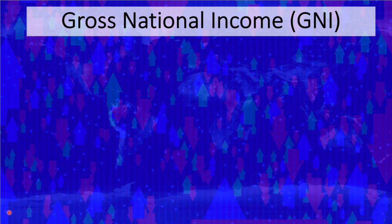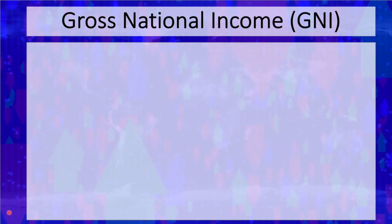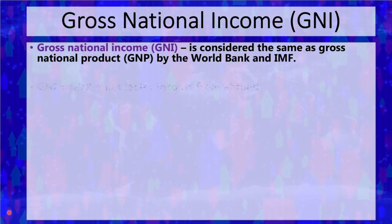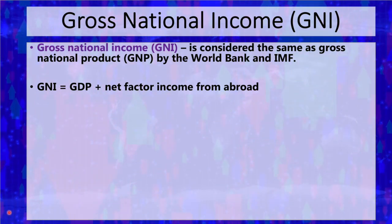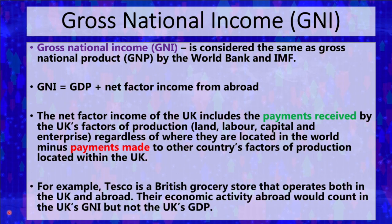Gross national income plays a brief but important role in this chapter. The accepted definition for the syllabus is the same as that used by the World Bank and the IMF, and it is considered to be identical to gross national product, or GNP. GNI is equal to GDP plus net factor income from abroad. The net factor income of the UK includes payments received by the UK's factors of production regardless of where they are located in the world, minus payments made to other countries' factors of production located within the UK. For example, Tesco is a British grocery store that operates both in the UK and abroad — their economic activity abroad would count in the UK's GNI but not in the UK's GDP.